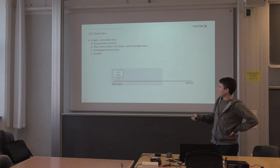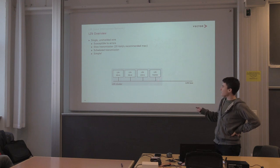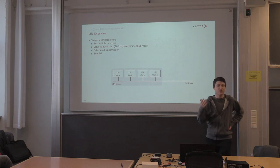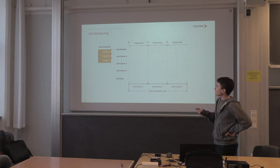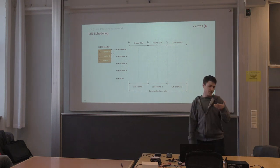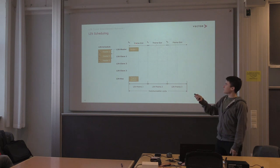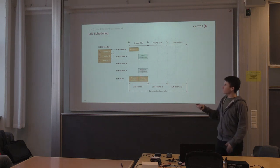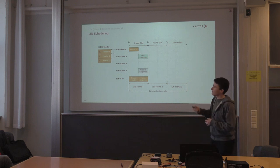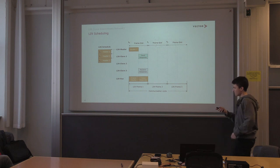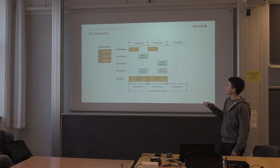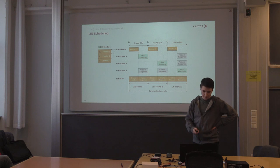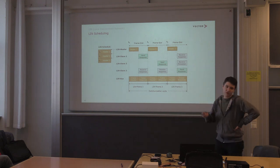A LIN topology has one master and multiple slaves. The master holds the schedule and determines who sends when. The master looks at the schedule, sends a header specifying which slave should respond, that slave sees the header and sends its response, then the master moves to the next entry — cycling through the schedule repeatedly. This ensures orderly, collision-free communication without the complexity of arbitration.